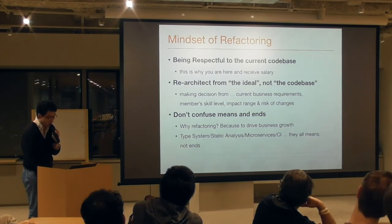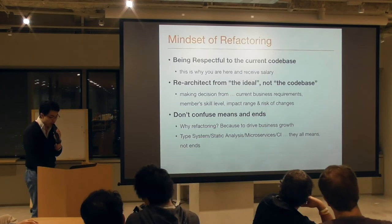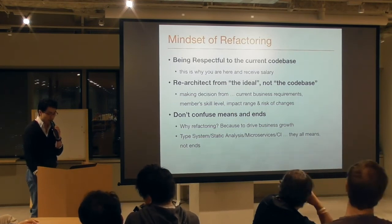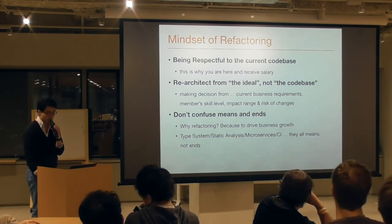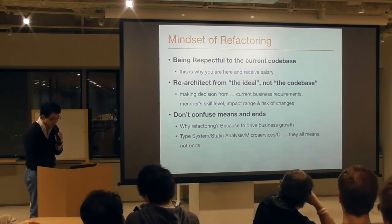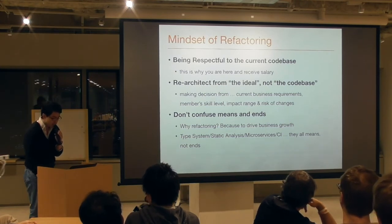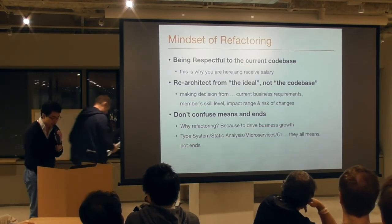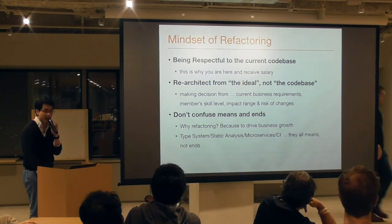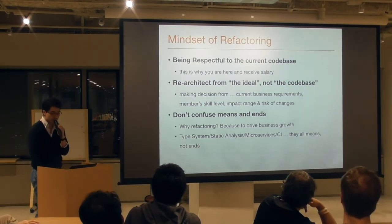At the same time, do not think from the current codebase — think from the ideal specification. Make decisions based on current codebase requirements, members' skill levels, impact range, and risk of changes. Don't confuse means and ends. Why do you need to refactor? For our case, it is to drive business growth. The type system, static analysis, microservices, implementing GraphQL, CI and CD — they are all means, not ends.